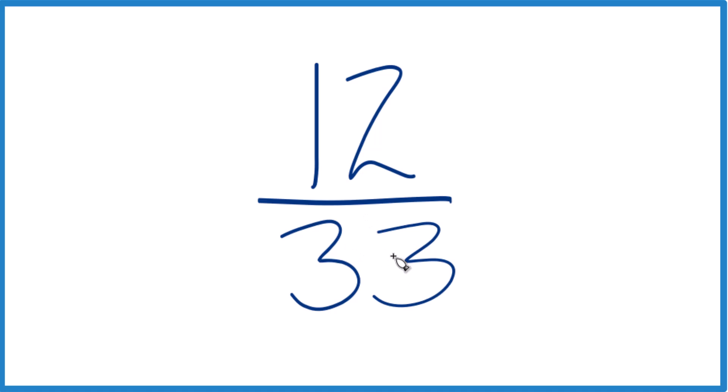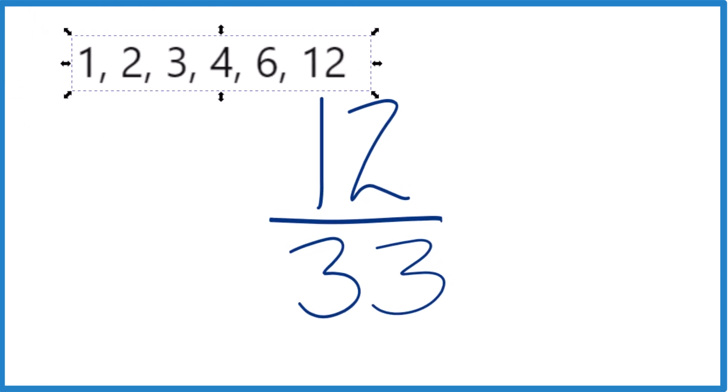We're looking for the greatest common factor. So here are the factors of 12: one times 12 gives you 12, two times six, and three times four.